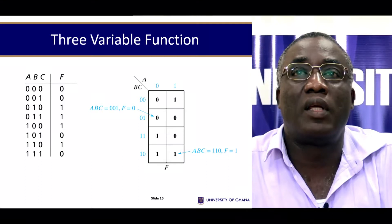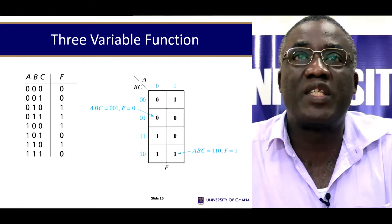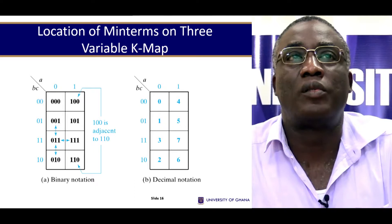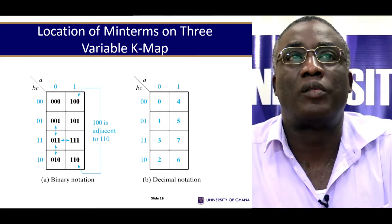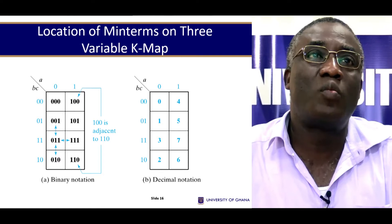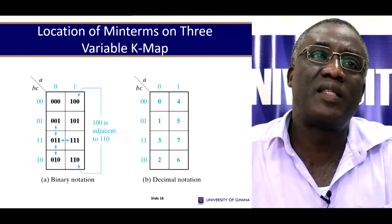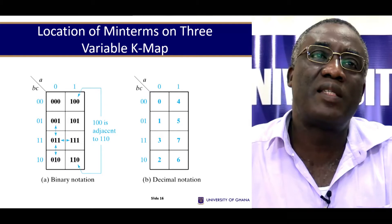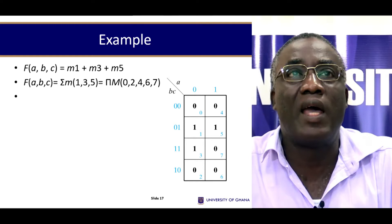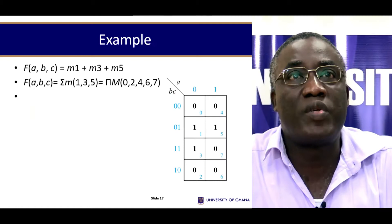So now each point here represents a special function. So this one here would represent A not B not C. This one here will represent not A, B, and C, and so on and so forth. All these cell positions represent specific mean terms as we said. Now they will not look so, but then this cell here, the cells here, are actually adjacent to the ones here.